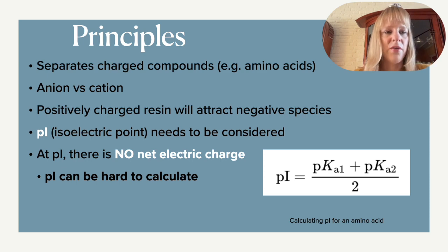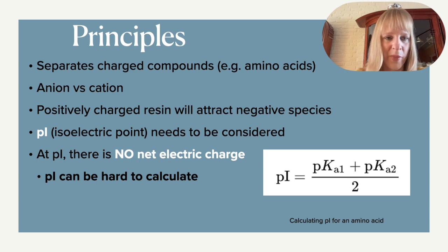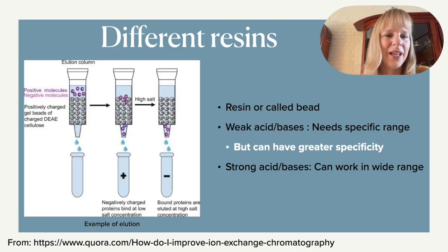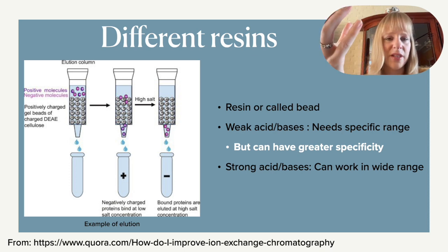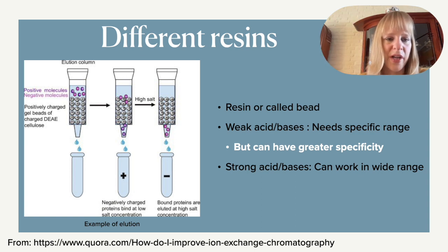If you do ion exchange chromatography, you need to avoid working at the pI because there's no net electric charge there. You need to be at least one order of magnitude away from it — at a range where you have either a predominant positive or negative charge on your molecule. In your column you need to have a charged resin, sometimes called beads, and at the end I will give you a couple of commonly used resins.